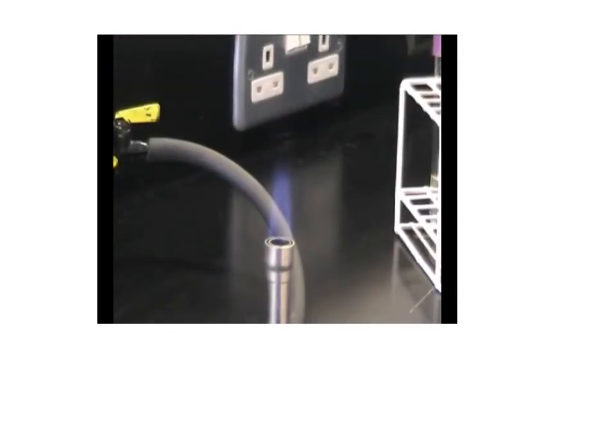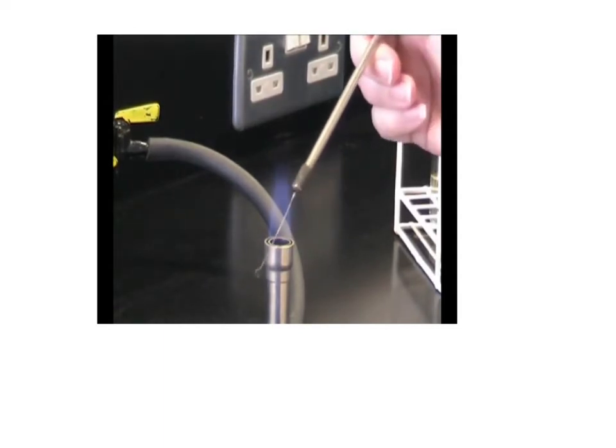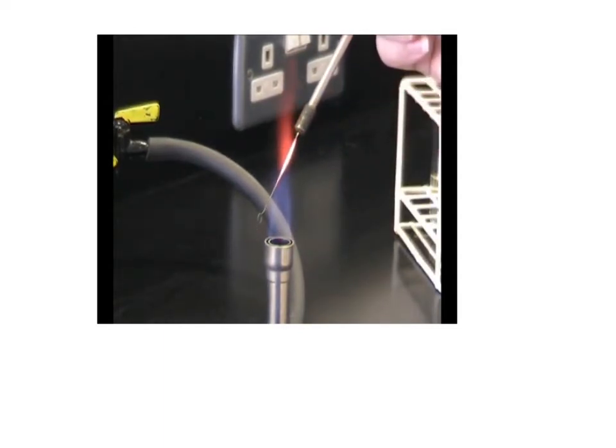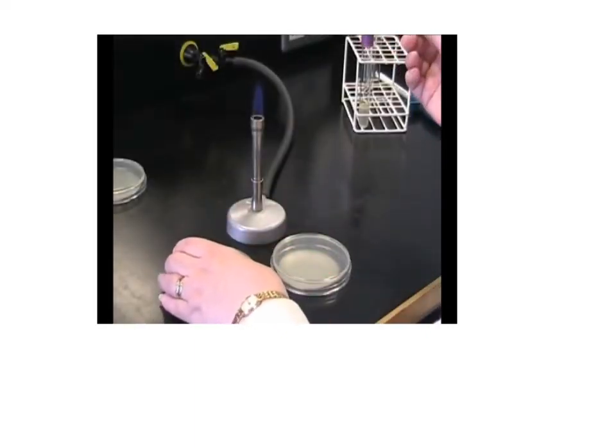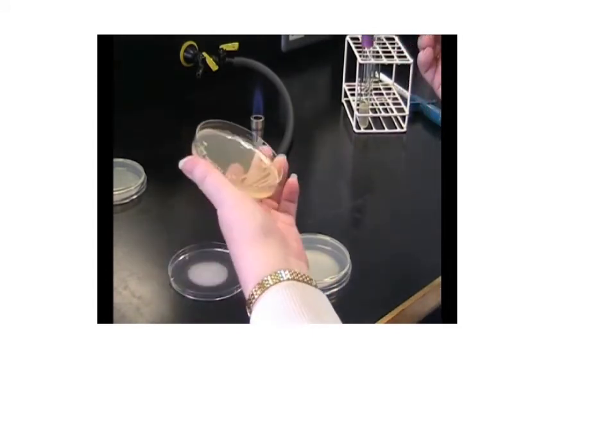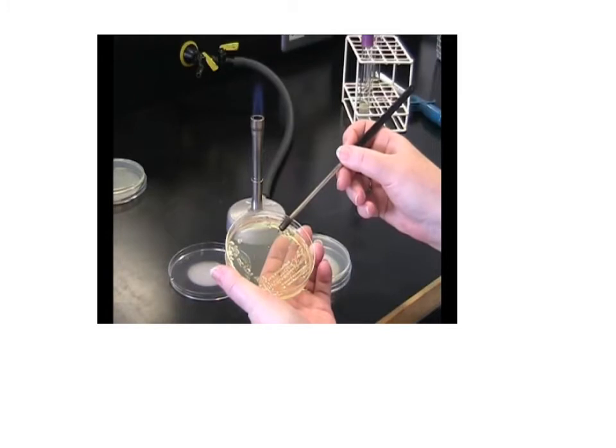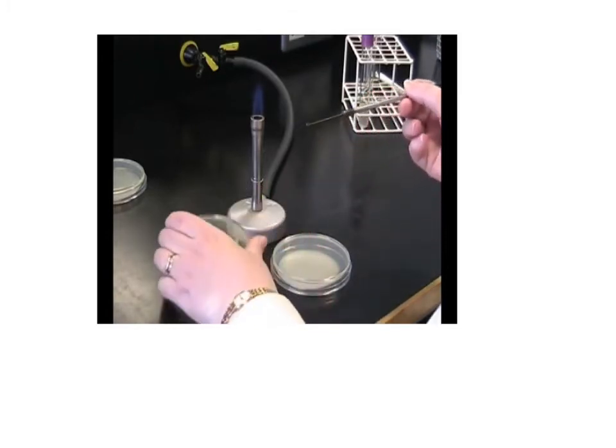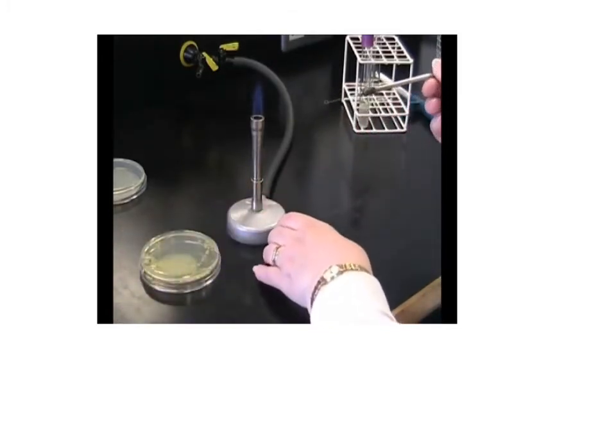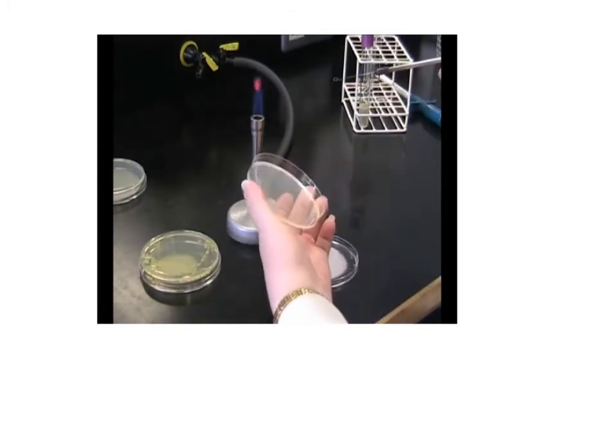When you want to use it, open the air hole and you'll get a nice bright blue cone of gas. Before you start work, sterilize your loop. Pass your loop through the flame, pulling it up through the top of the blue cone until it goes red hot. Remove it and allow to cool. Do not put it down on the bench. Using your flamed and cooled loop, take a plate and remove an isolated colony.